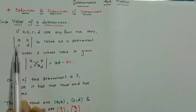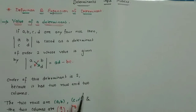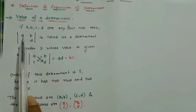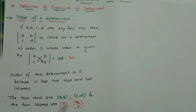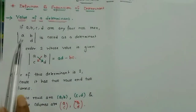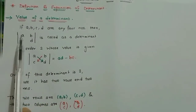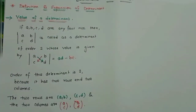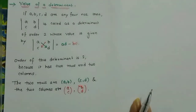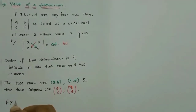To recap: the order of the determinant is determined by how many rows and columns there are. The first row is a, b and the second row is c, d. Rows are horizontal and columns are vertical. a, c form the first column and b, d form the second column. Now let's solve some problems based on this.